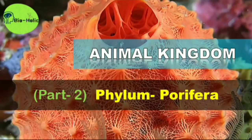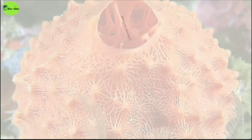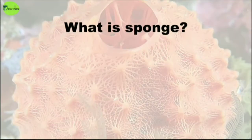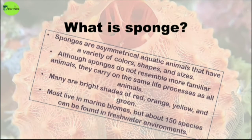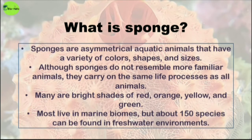Hello everyone, welcome back to another video from Bioholic. Today in this particular video I am going to talk about the phylum Porifera, or the sponges. Let's begin. First, we need to know what a sponge is. Sponges are the simplest animals among all animals, and sponges are asymmetrical aquatic animals that have a variety of colors, shapes, and sizes.